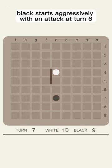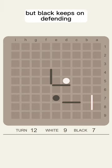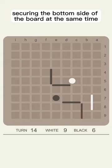Black starts aggressively with an attack at turn 6. White decides to commit and test his opponent, but Black keeps on defending, securing the bottom side of the board at the same time.